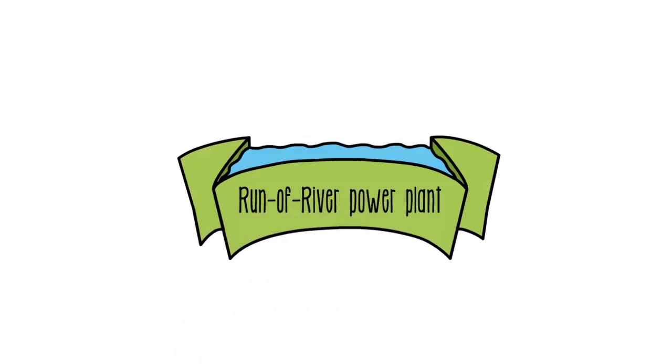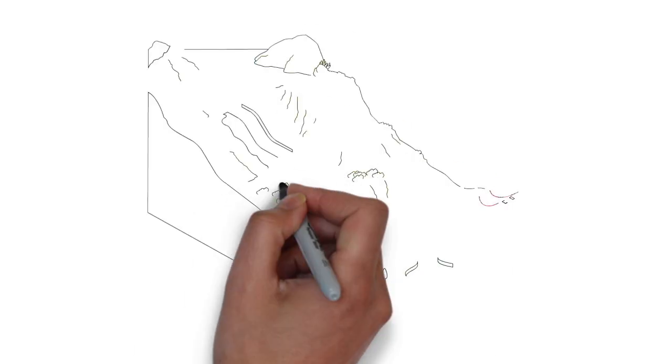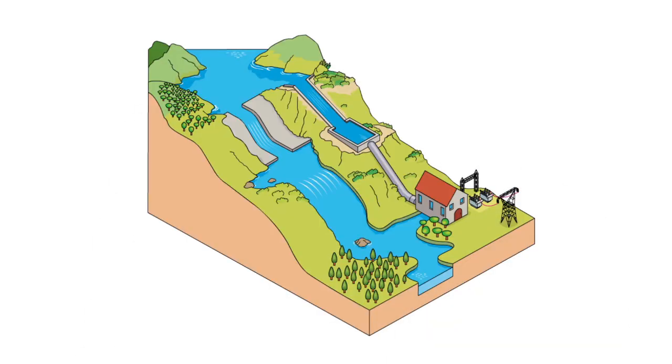Another type of hydroelectric plant is the run of river one, that harnesses the natural slope of the river to create the drop, diverting the water through a canal towards the plant.